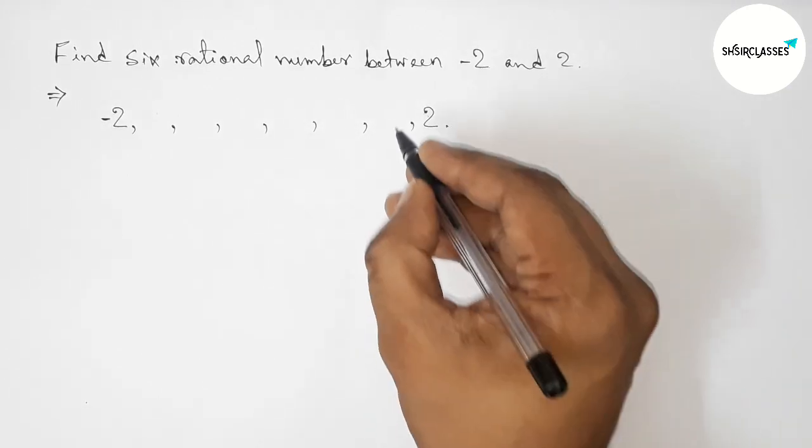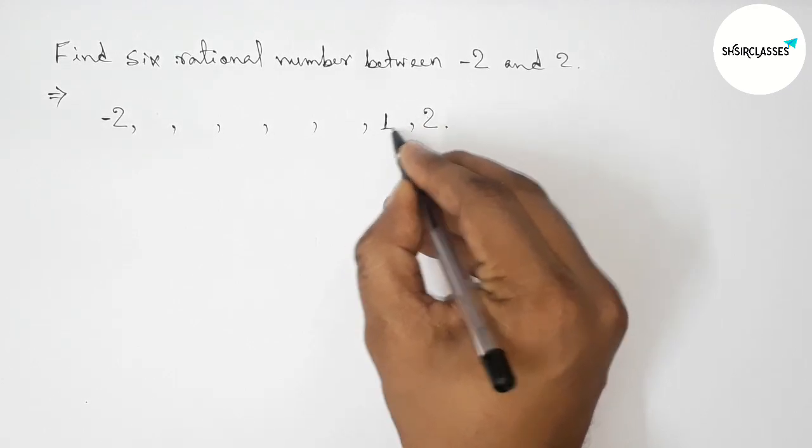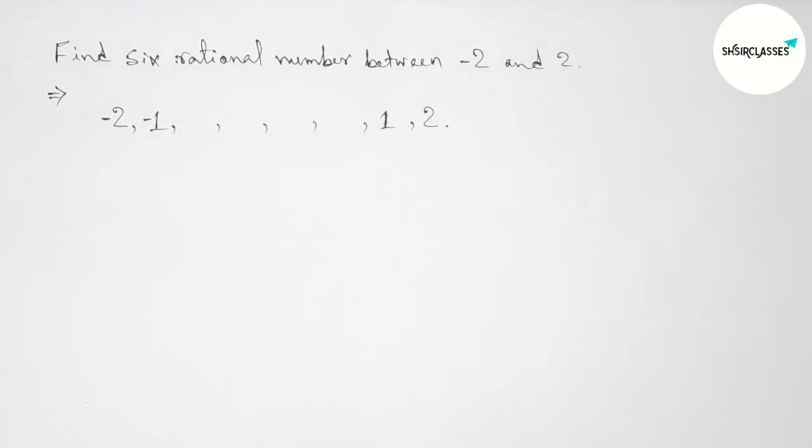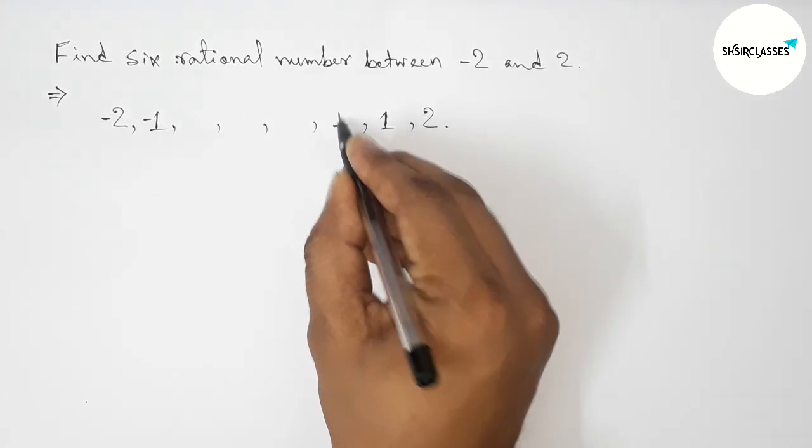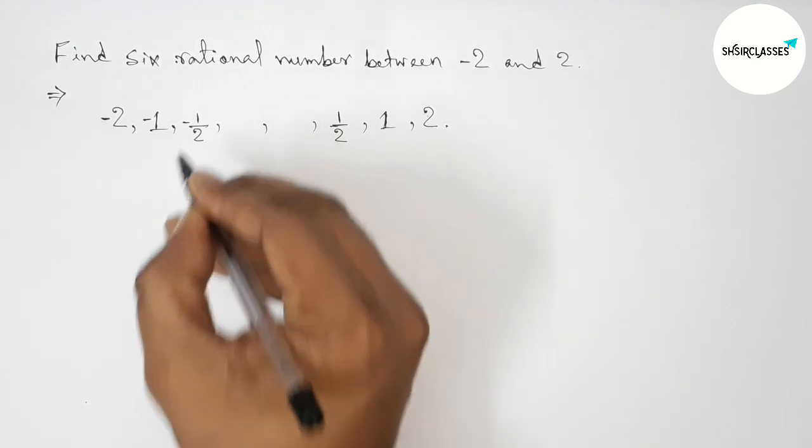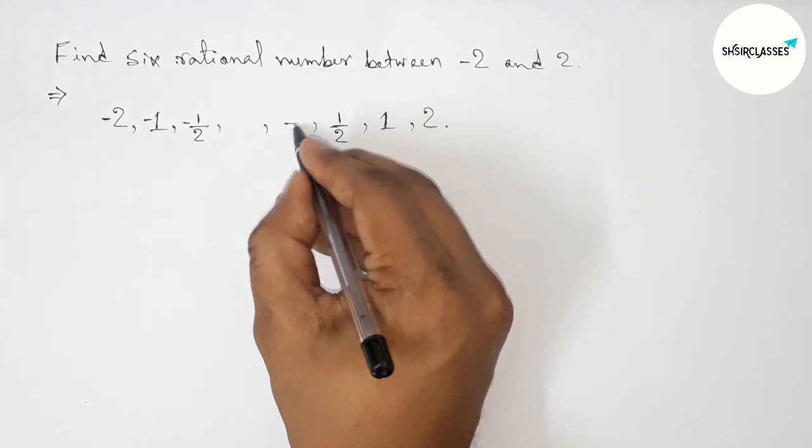So here taking one and here minus one. You can take another but here taking one and minus one. Then taking other two, so taking here one by two and taking here minus one by two. Okay, so four rational numbers.